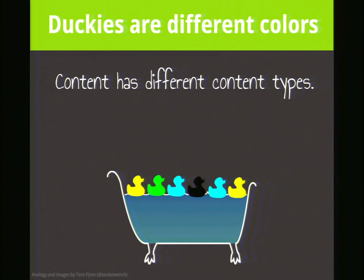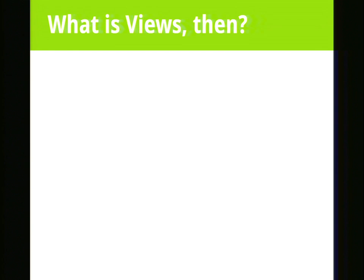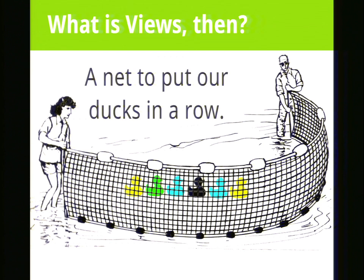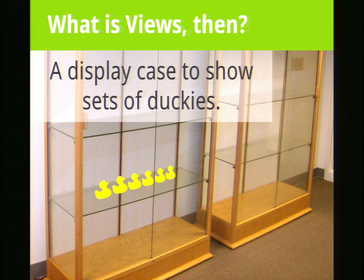Duckies come in different flavors — different colors, Marvel duckies, Wizard of Oz duckies. My point is, there are different content types, like different types of duckies. But it's a little disorganized — just this big bathtub full of duckies floating around. So we introduce Views. Views is essentially a net that helps us keep our ducks in a row — takes the duckies we want, sorts them, puts them in order so people can view and consume the content we're trying to share.